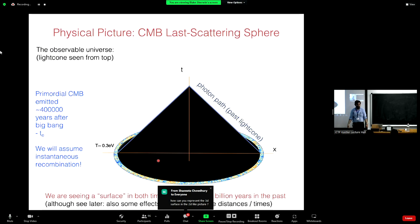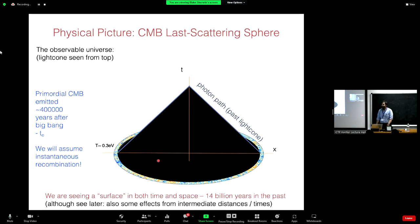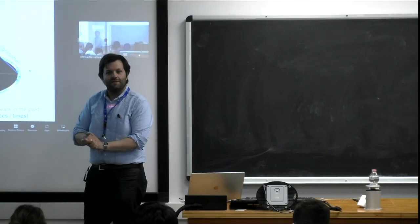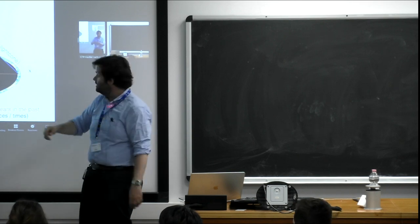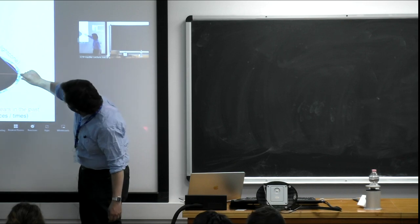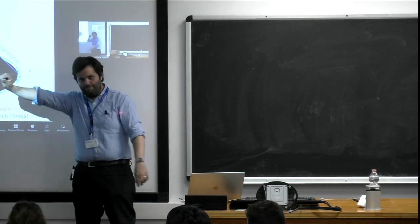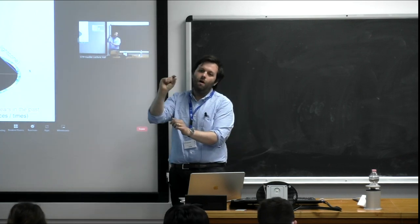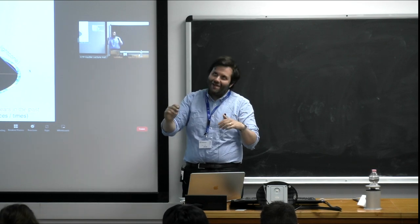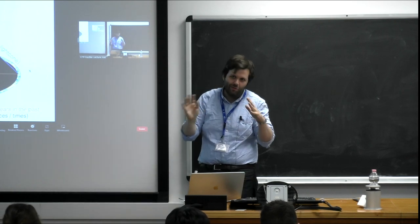The visibility function is not exactly a delta function — it has some width. The most prominent effect of this finite width is that very small fluctuations get blurred out. That's one reason the CMB power spectrum is cut off at small scales. There's also diffusion damping, and both contribute similar amounts. The picture is: we're seeing a shell around us 14 billion years in the past, looking far away and far into the past simultaneously.